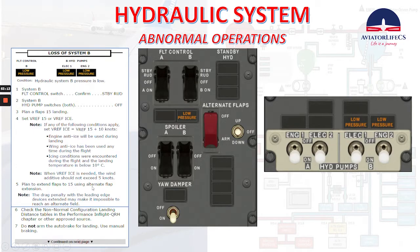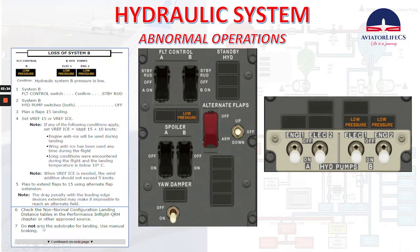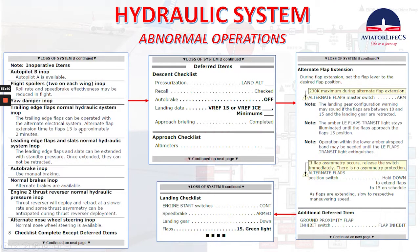Plan a flap 15 landing — set Vref 15 or Vref ice if it applies. Plan to extend flaps to 15 using alternate flap extension. Note: the drag penalty with the leading edge devices extended may make it impossible to reach an alternate field. Check the non-normal configuration landing distance tables in the performance in-flight QRH chapter or other approved source. Do not arm the auto brake for landing — use manual braking.